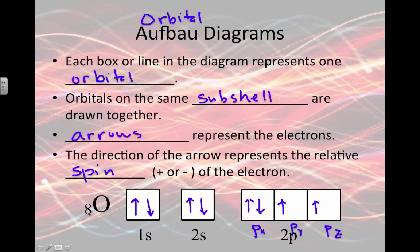So I need 8 electrons for oxygen. That means I should have 8 arrows in my picture. Here's 2, 4, 6, 7, 8 electrons.